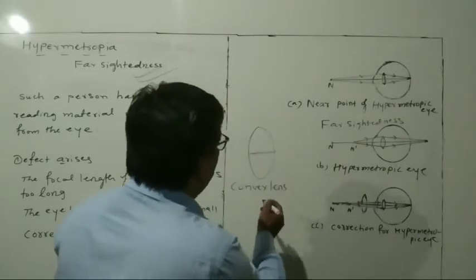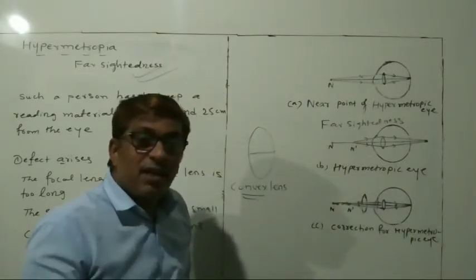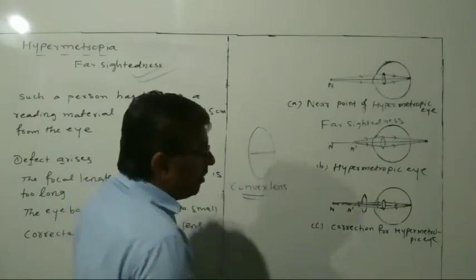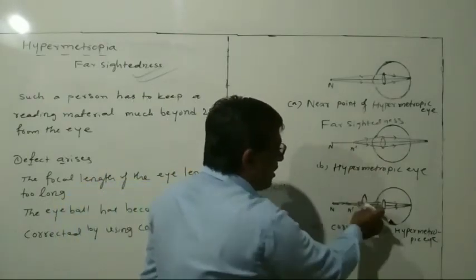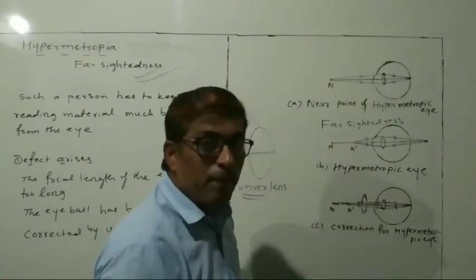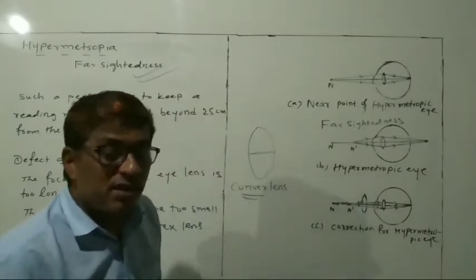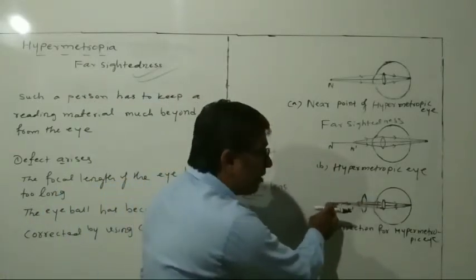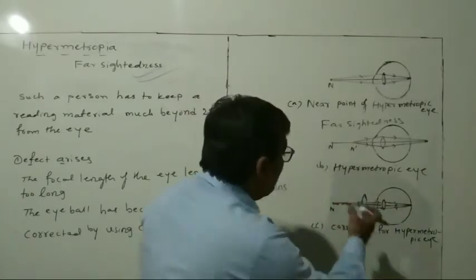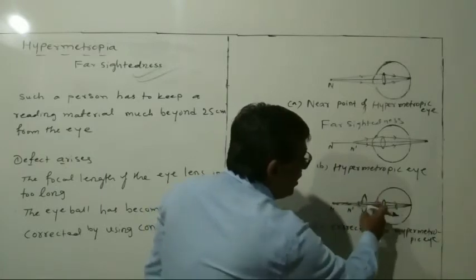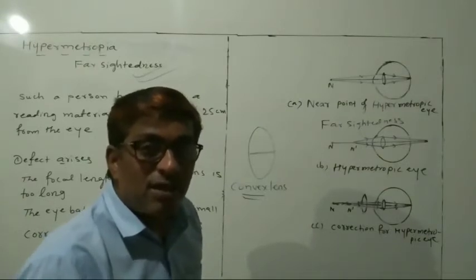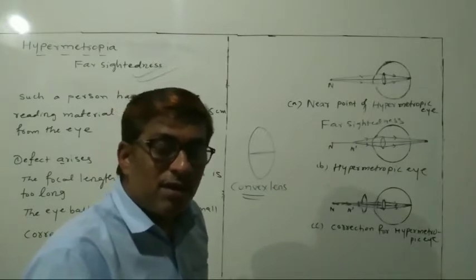This can be corrected by using the convex lens. Farsightedness can be corrected by using the convex lens. When you place the convex lens here, the image will fall on the retina. The image of the object falls here on the retina, and the person can see the object clearly.